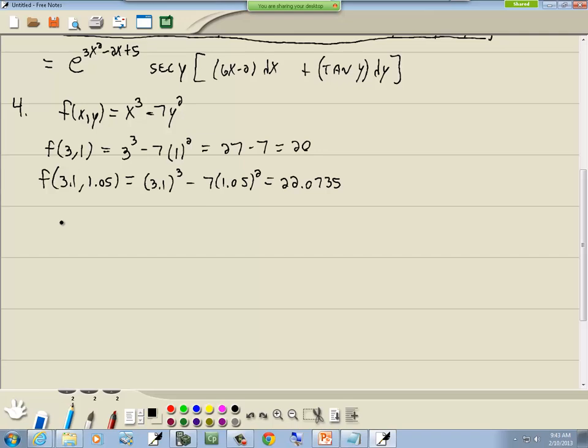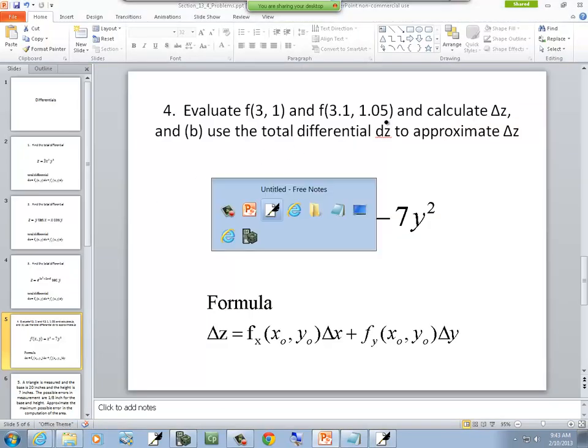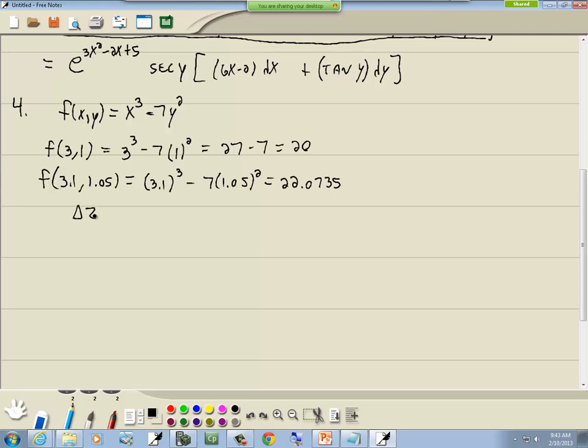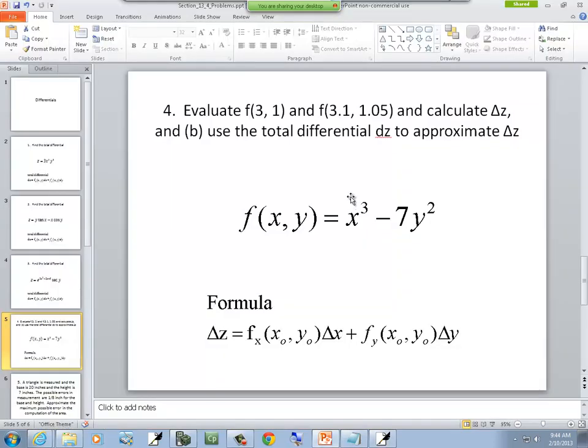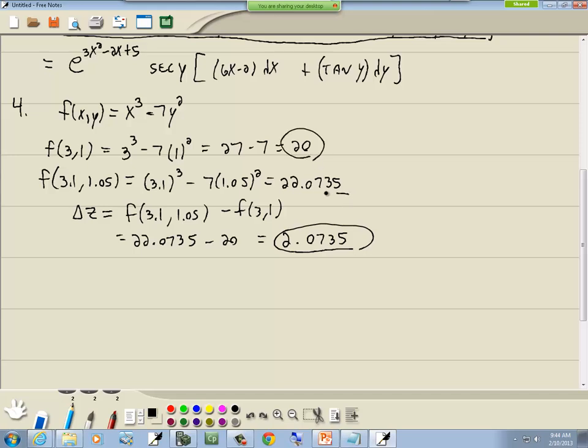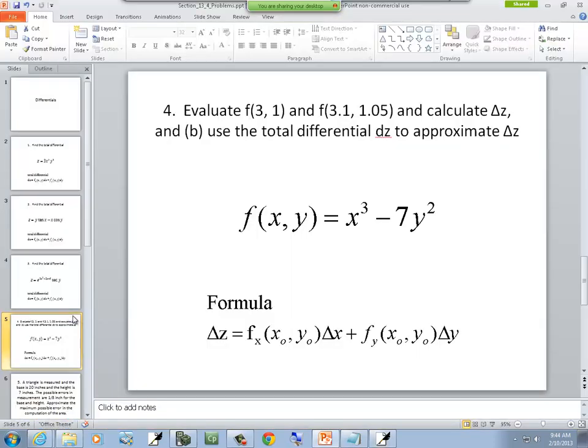And after they calculate those, they tell us to calculate delta z, the change in z. And this is using just basic algebra. So we're going to take f of 3.1, 1.05 minus f of 3, 1, which gives us 22.0735 minus 20, which should give us 2.0735. And this is the first part.